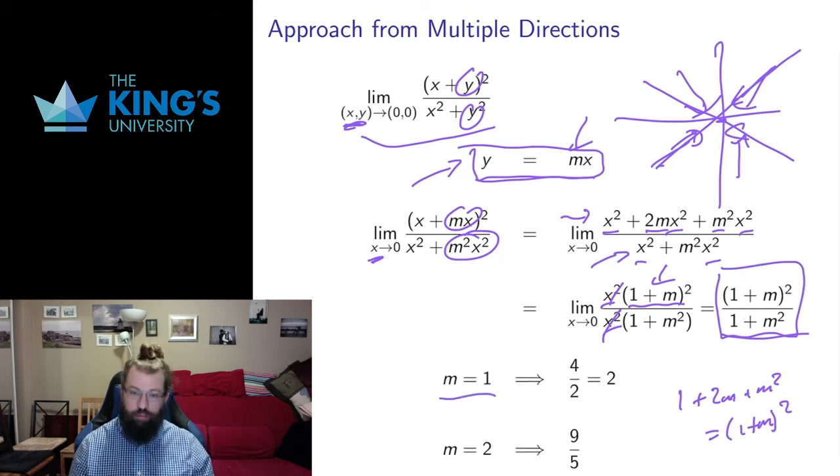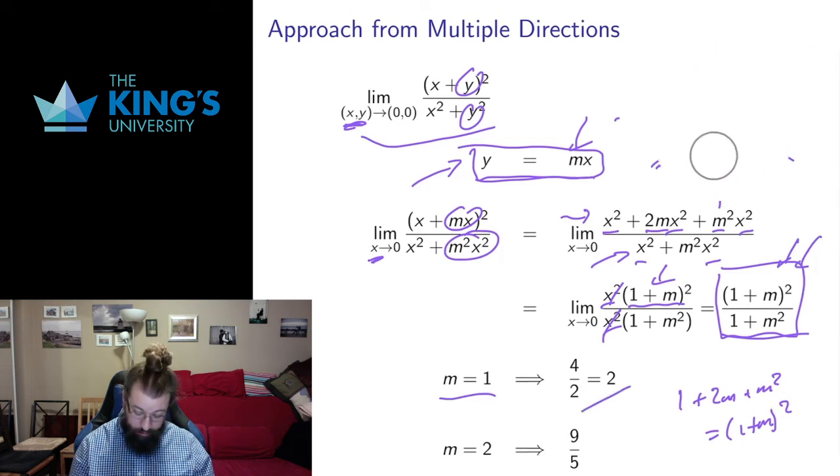Now what happens if I make my slope explicit? What happens if I approach on a line of slope 1? Well then m equals 1. If I put m equals 1 in this expression, I get that the limit is going to be 2. So if I approach on the line of slope 1, I get a limit of 2.